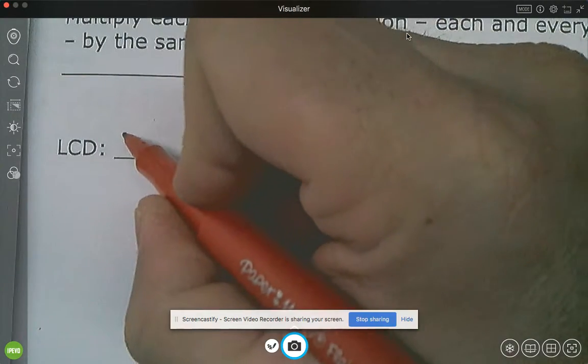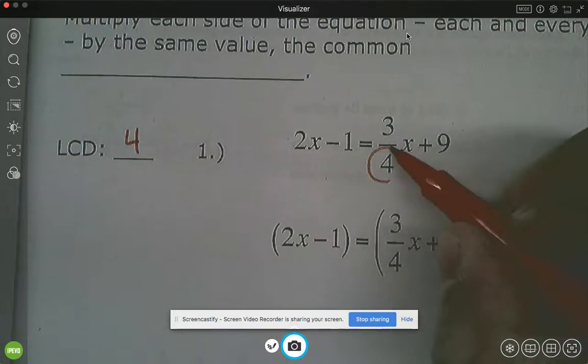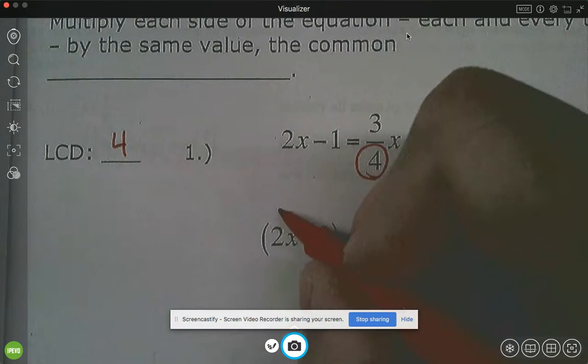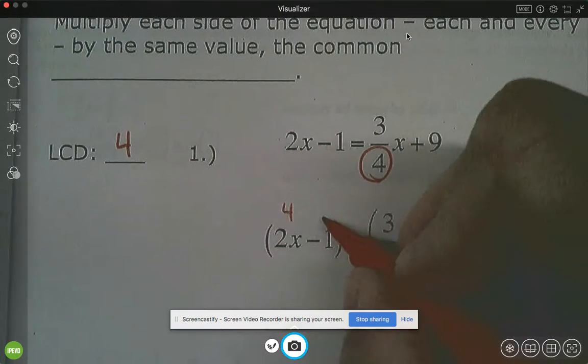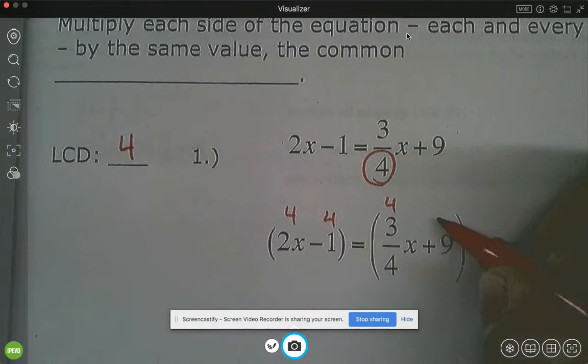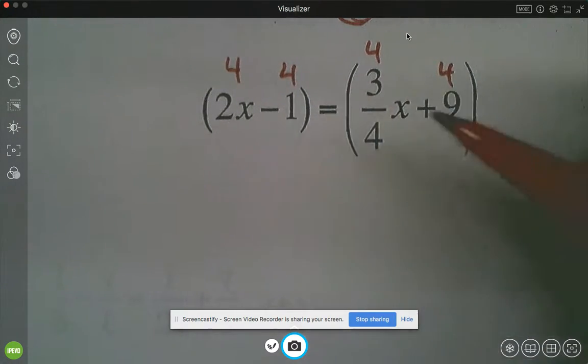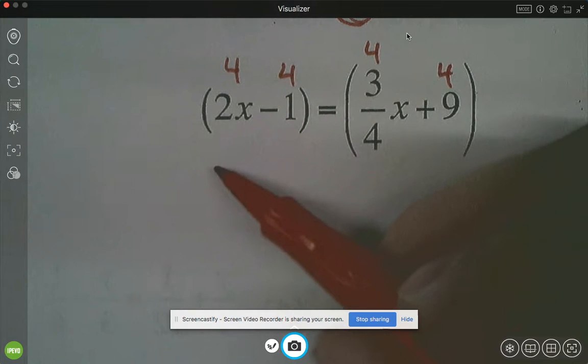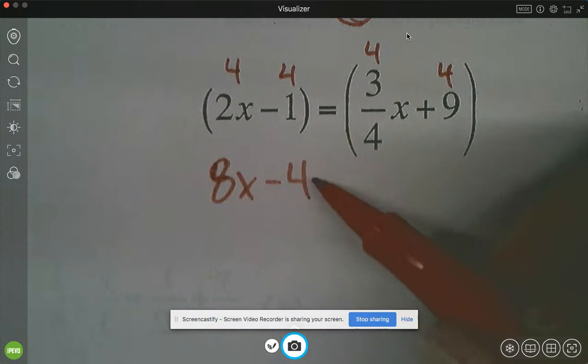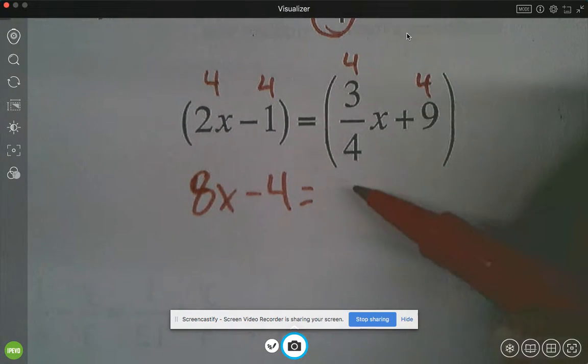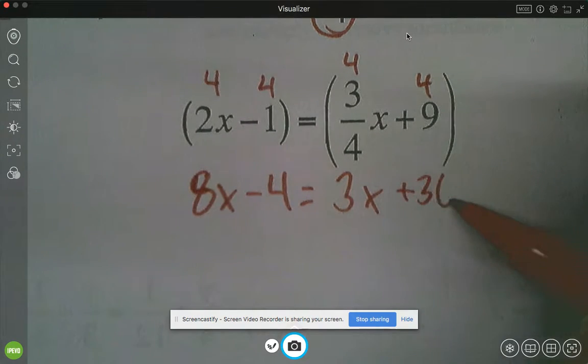The LCD is just 4. It's the least common denominator. So again, everything has to get multiplied by 4. So as we did in the last video, I want to put little 4s above it here. And then can someone tell me what's the left side of the equation going to be? 8x minus 4. Then over here, what is this side going to clear out to be? 3x plus 36.